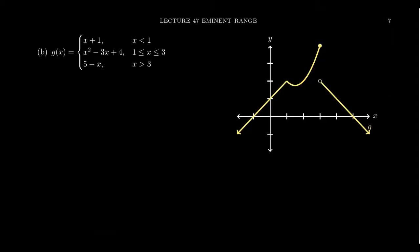Let's look at another example — this one's a little more involved with three parts to the picture. We'll take it step by step. The blue part, when x is less than 1, is the line x plus 1. The domain is given as negative infinity to 1, because that's what we're told.